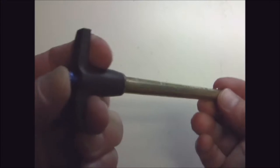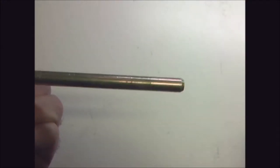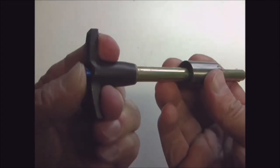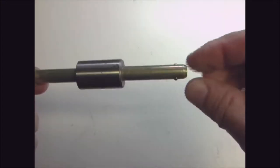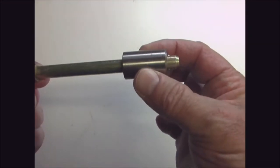To place it into an object, push the button in. This allows the two steel balls to move inward, and then you can place the pin into the object. Releasing the button forces the two steel balls out, locking the pin into the object.